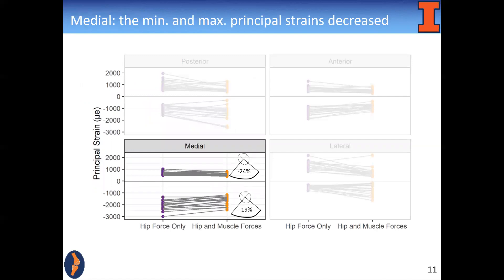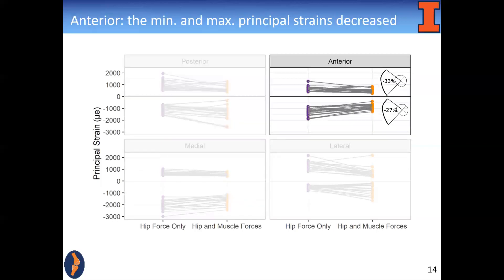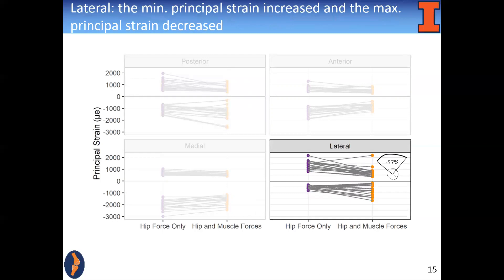We first compare the principal strains in each quadrant. When muscle forces are included in the medial quadrant, both the compressive and tensile strains decrease in magnitude. In the posterior quadrant, the tensile strain decreases in magnitude while the compressive strain increases in magnitude. In the anterior quadrant, both the compressive and tensile strains decrease in magnitude. In the lateral quadrant, the tensile strain decreases in magnitude while the compressive strain increases in magnitude.